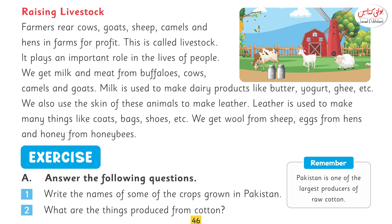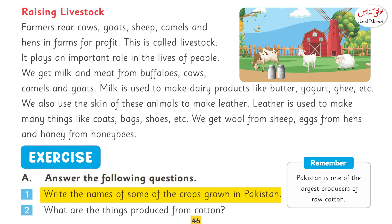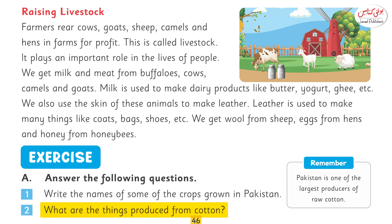Question number one: Answer the following questions. Write the names of some of the crops grown in Pakistan. The answer is: wheat, barley, rice, peas, and chickpeas are grown in Pakistan. What are the things produced from cotton? We produce threads and clothes from cotton.